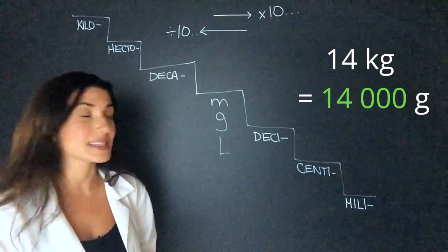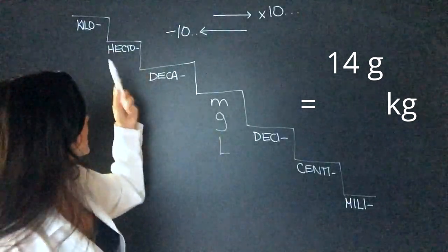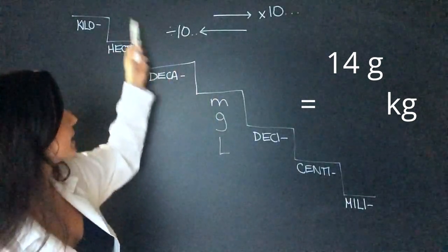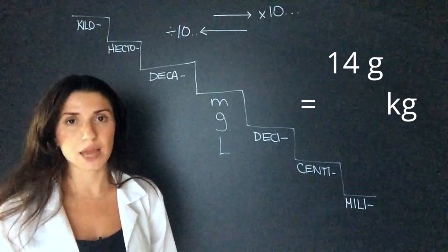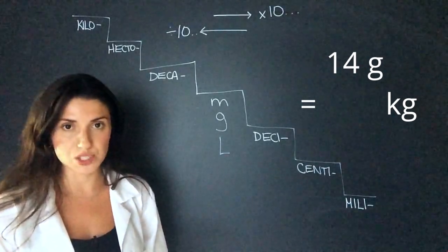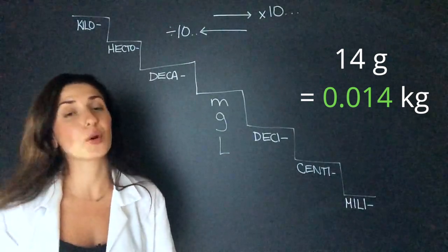The other way is the exact opposite. Let's say we have 14 grams and we need that in kilograms. We're going to go one, two, three, divide it by 1000 this time, or move the decimal three places over. And we're going to have 0.014 kilograms.